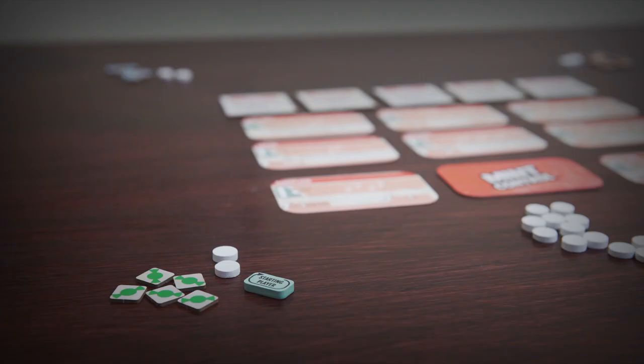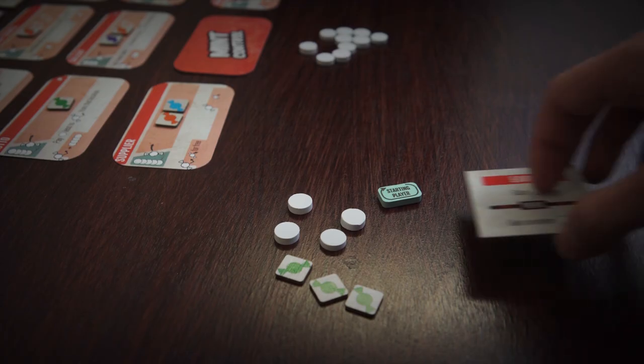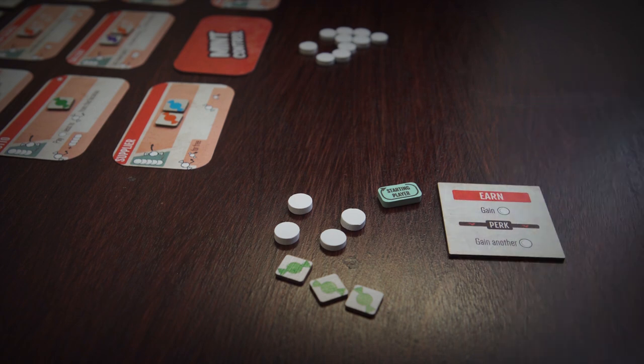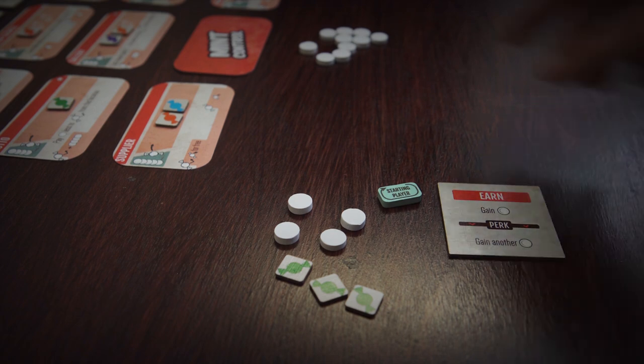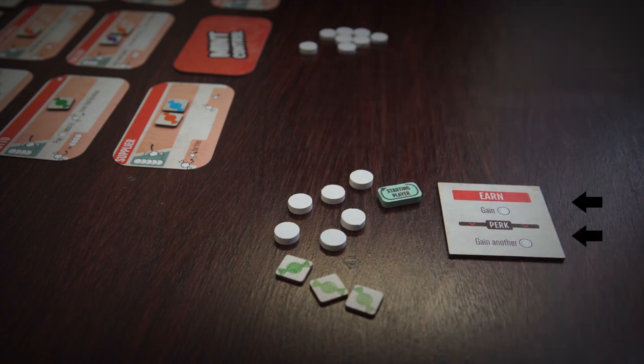The player with the freshest breath starts the game with the starting player token. Each round, the starting player will select one of the available action tiles and place it in front of them. They will then perform that action followed by its perk. Then, in clockwise order around the table, each other player will perform that same action.